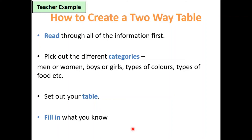The first crucial thing is to read all the information. The question will have a lot of data. Read through it carefully and make sure you've identified what the variables are — it might be boys and girls, children and adults, left-handed and right-handed people. You need to identify what the categories are.